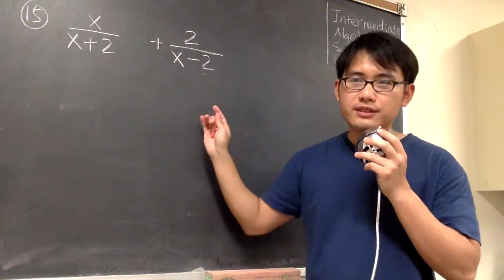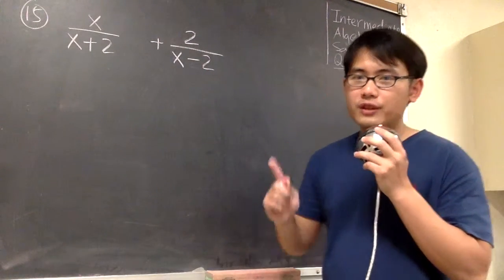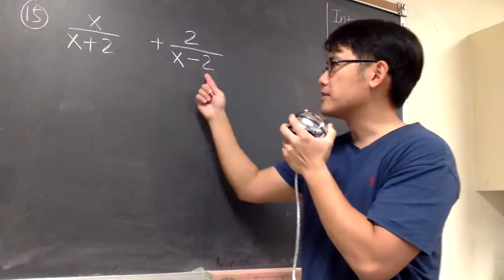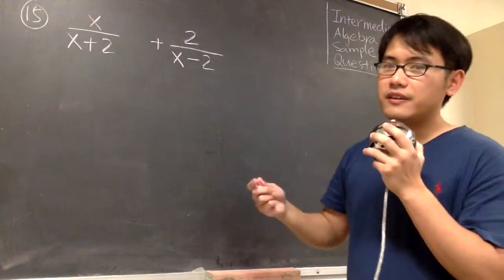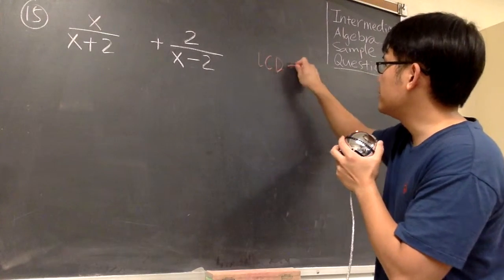We are adding algebraic fractions, and to add fractions, we first have to make sure if the denominators are the same or not, but unfortunately, they are not the same in here. Therefore, we have to look for the lowest common denominator first.